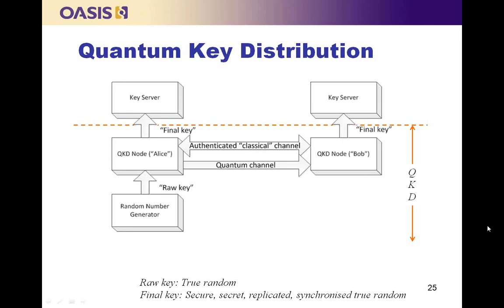There are also new cryptographic technologies transforming trust establishment and secure delivery of key material. Quantum key distribution, or QKD, is already being used in commercial and government solutions, taking advantage of quantum effects in light transmitted through an optical channel to detect and respond to eavesdropping. Using a quantum channel, a stream of true random numbers can be shared between endpoints and used as seed material for cryptographic keys. KMIP is already being used as the key management protocol laid on top of QKD systems.